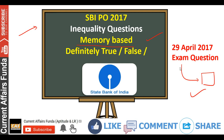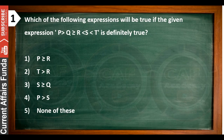So let's start our class today. First question: it is said that which of the following expressions will be true if the given expression is P is greater than Q is greater than R. This expression is given — which one is definitely true? Definitely true means I will tell you which one is directly true. It will be definitely true; we will not give 'either' or other conditions.